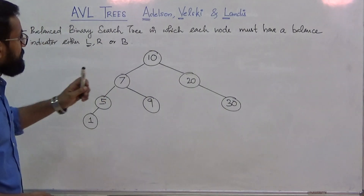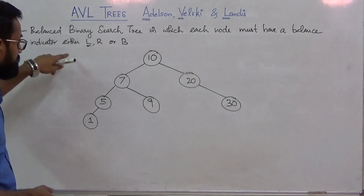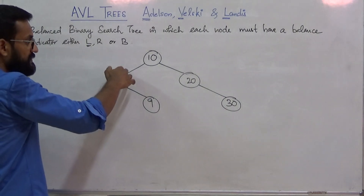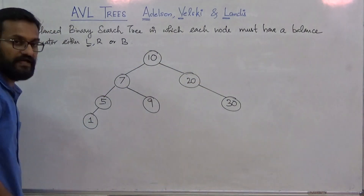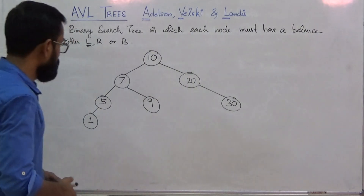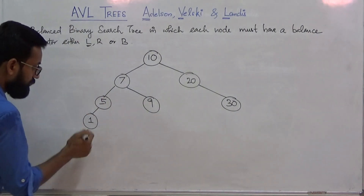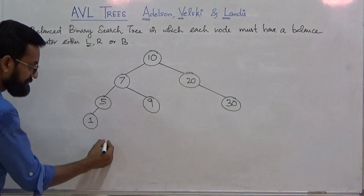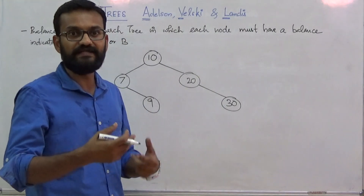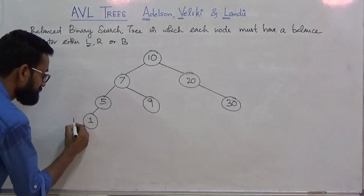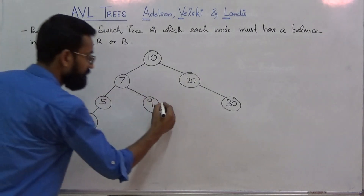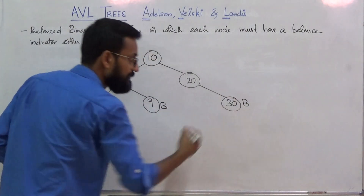Let us try to assign balance indicators to each and every node in this binary search tree. This tree satisfies the binary search tree property: the left subtree has key values lesser than the node and the right subtree has key values greater than the node. Taking node 1, its left subtree and right subtree are both empty trees, both having height -1. Since both subtrees are of the same height, we fix the balance indicator as B. For this reason, the balance indicator of all leaf nodes is balanced (B).